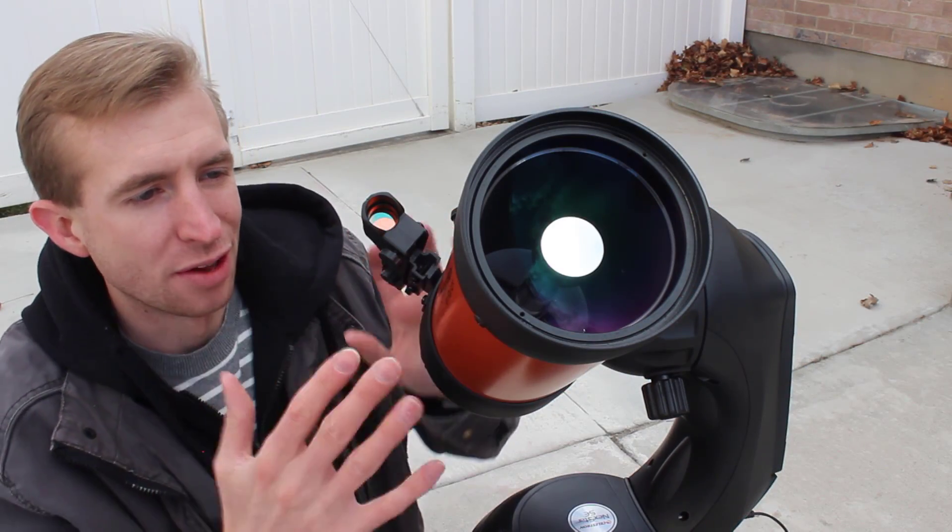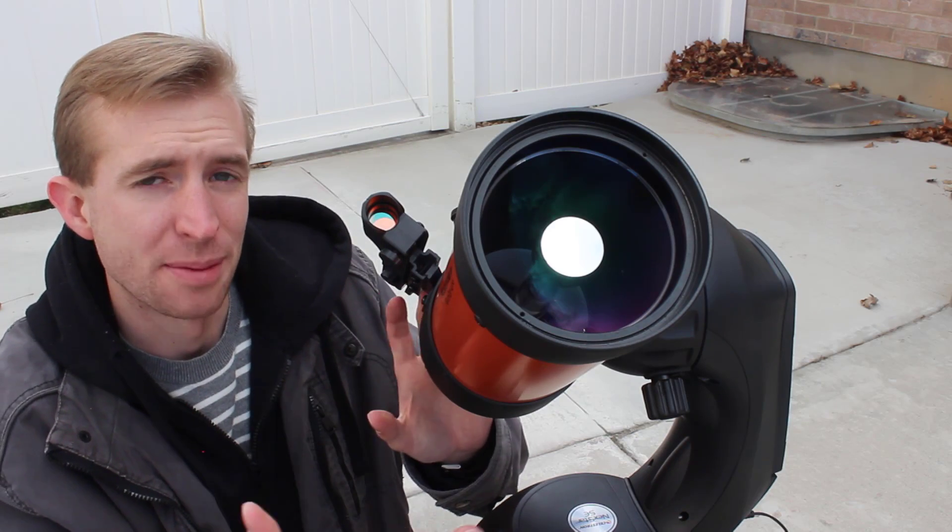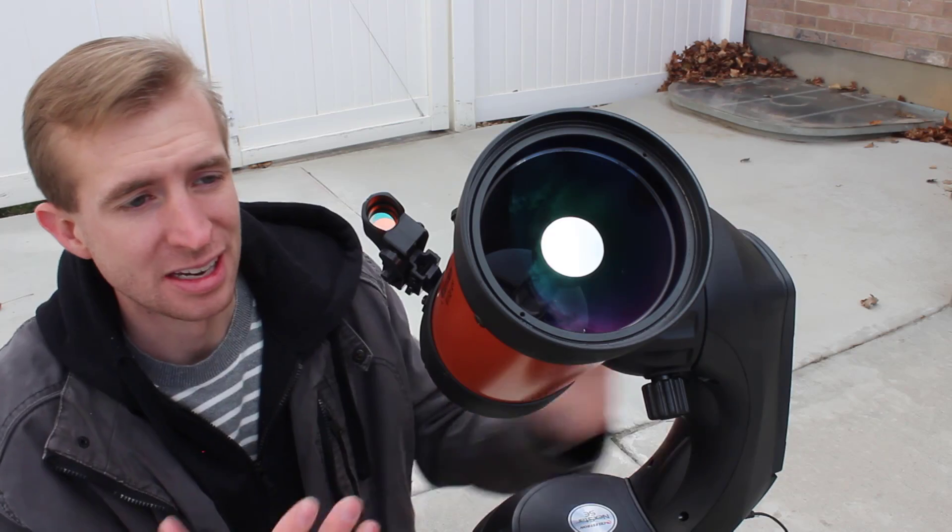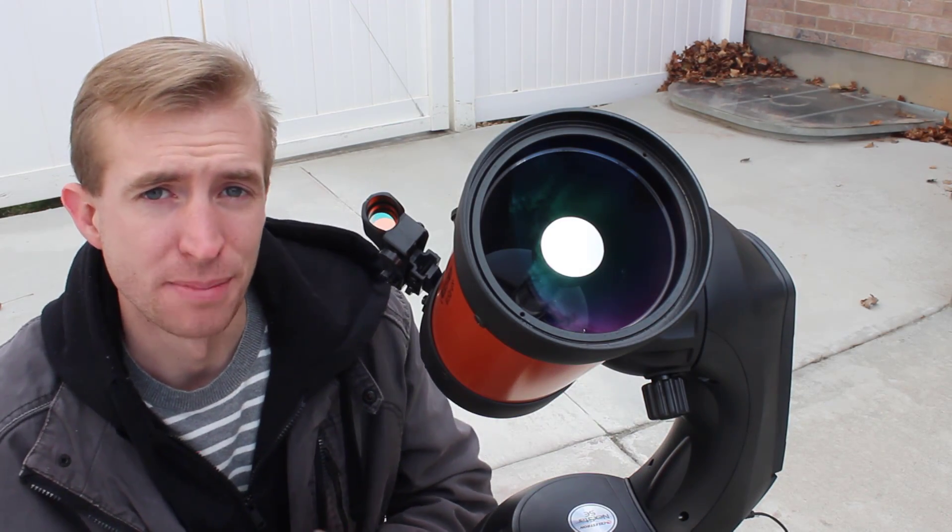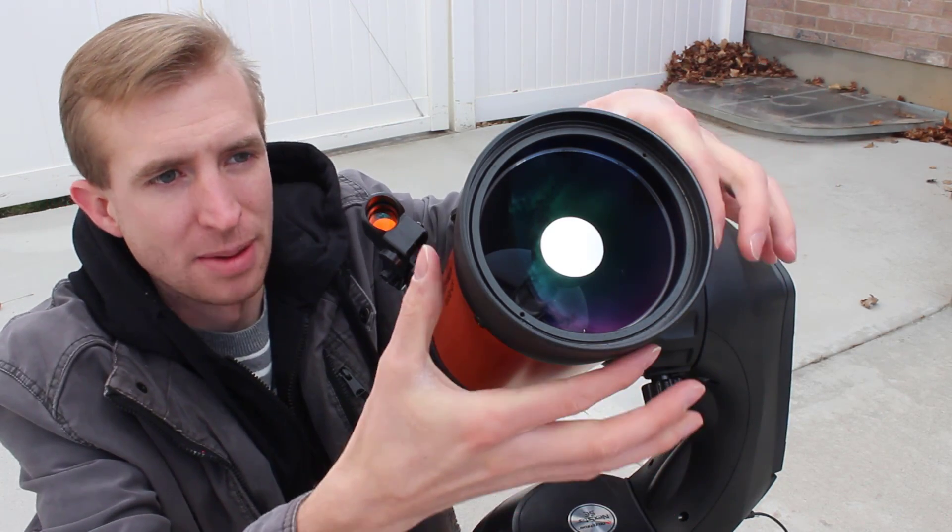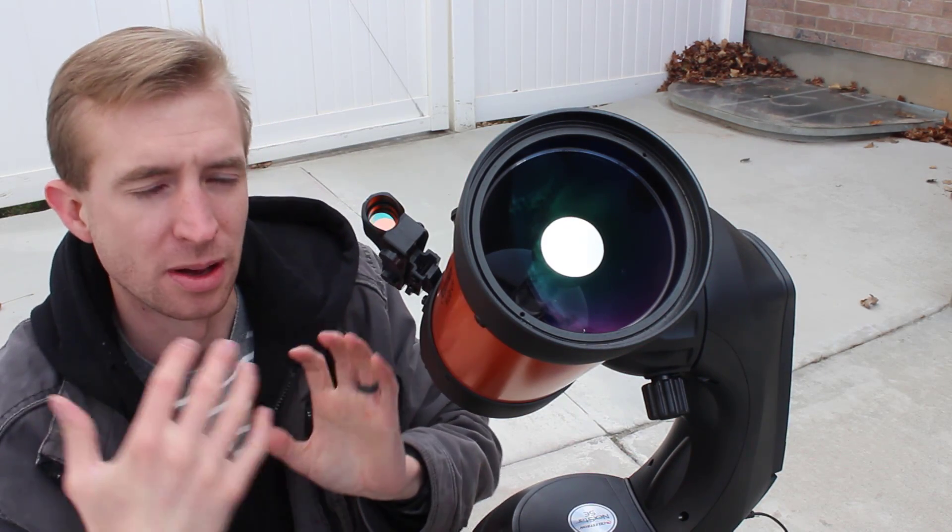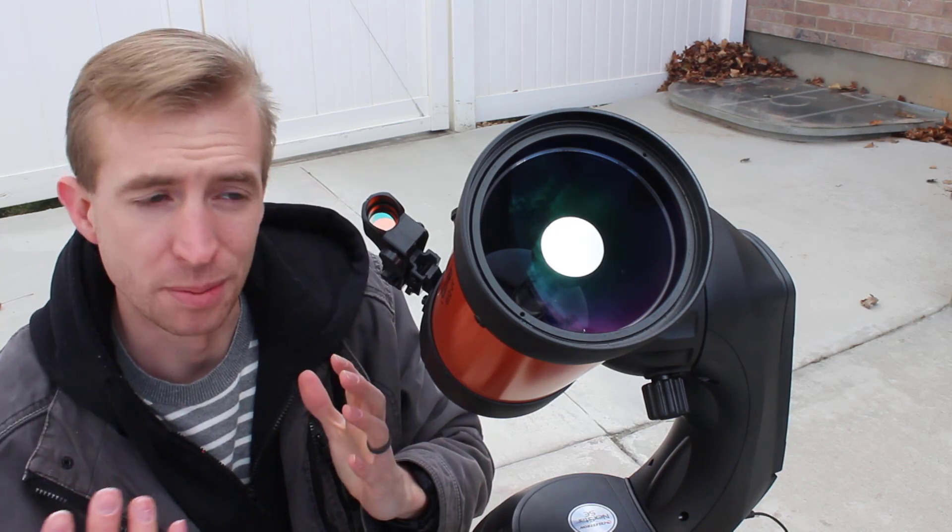Now beginners and experts alike will love the Nexstar 4SE because of the type of telescope it is. This is a Maksutov Cassegrain telescope design, which is awesome because it's very maintenance-free. The big, thick Maksutov corrector lens here at the front is essentially sealed in place at the factory, so you don't have to worry about aligning the mirrors, or what we call collimation.